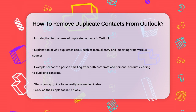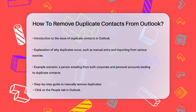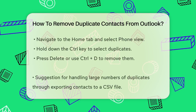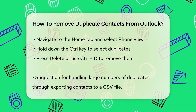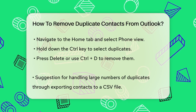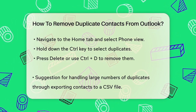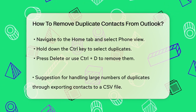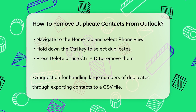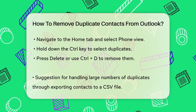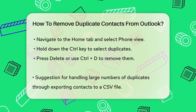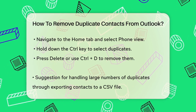To remove these duplicates one by one, start by clicking on the People tab in the Outlook navigation bar. Then go to the Home tab and select Phone from the Current View group. This view makes it easier to spot similar contacts. Hold down the Control key and select the duplicate contacts you want to remove. Once you've selected all the duplicates, press the Delete key or use the Control-D shortcut.